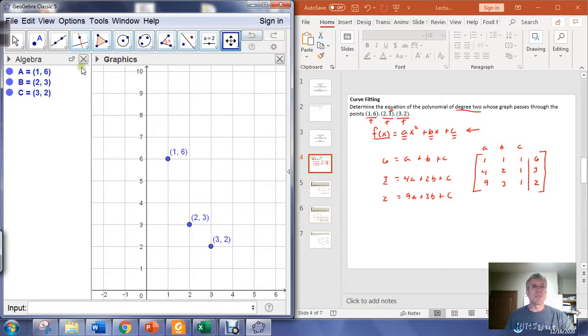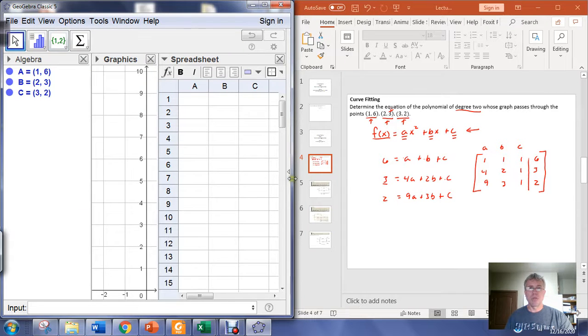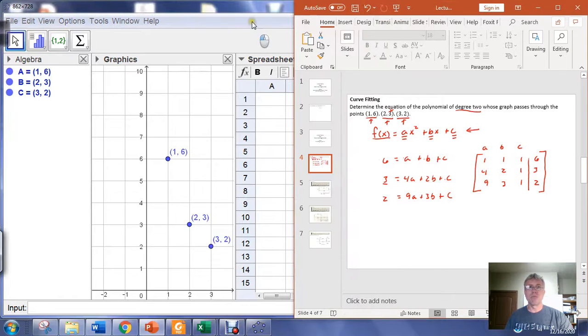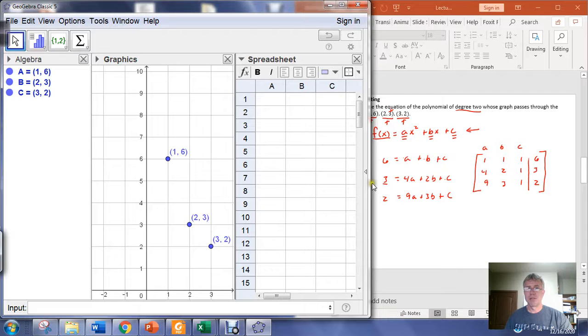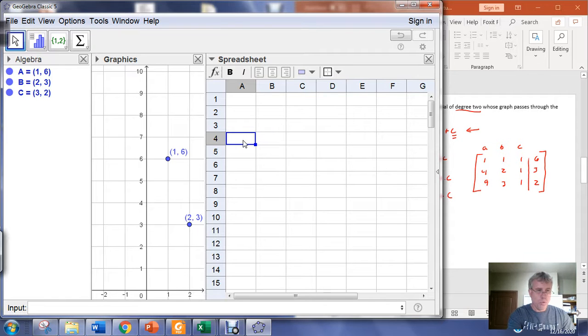We're going to do the same thing we did before. Go into the view menu, open the spreadsheet view, and input the matrix into the rows of the spreadsheet. The first row of the matrix is 1, 1, 1, 6, so I'm going to type 1 tab, 1 tab, 1 tab, 6, enter.